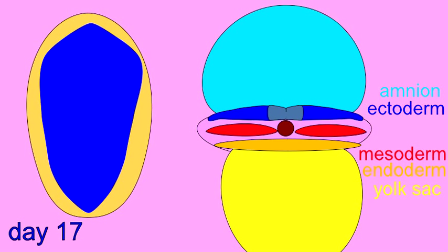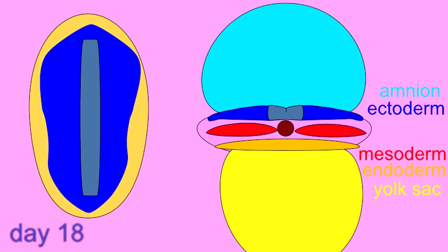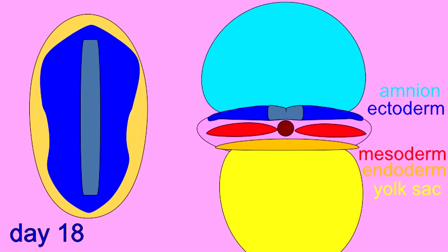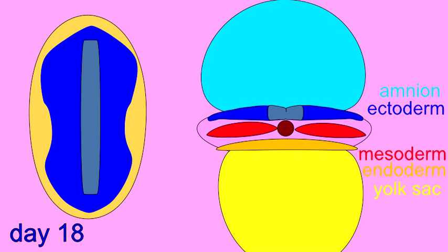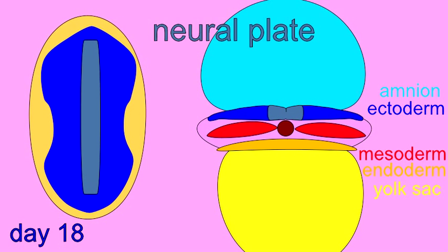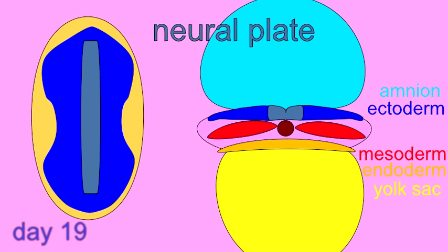Cells of ectoderm differentiate to become neuroectoderm, capable of generating nervous tissue, and form a flat neural plate.